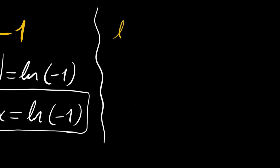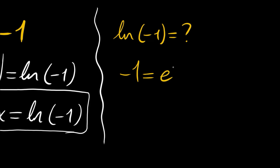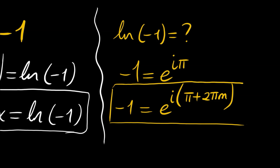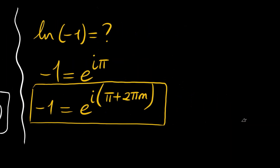Before doing this, let's try to find ln of negative 1 first. We will write negative 1 as e to the power of i·π, or more generally e to the power of i times (π + 2πm). Negative 1 can be expressed like this — you may have seen this. Let me explain shortly.